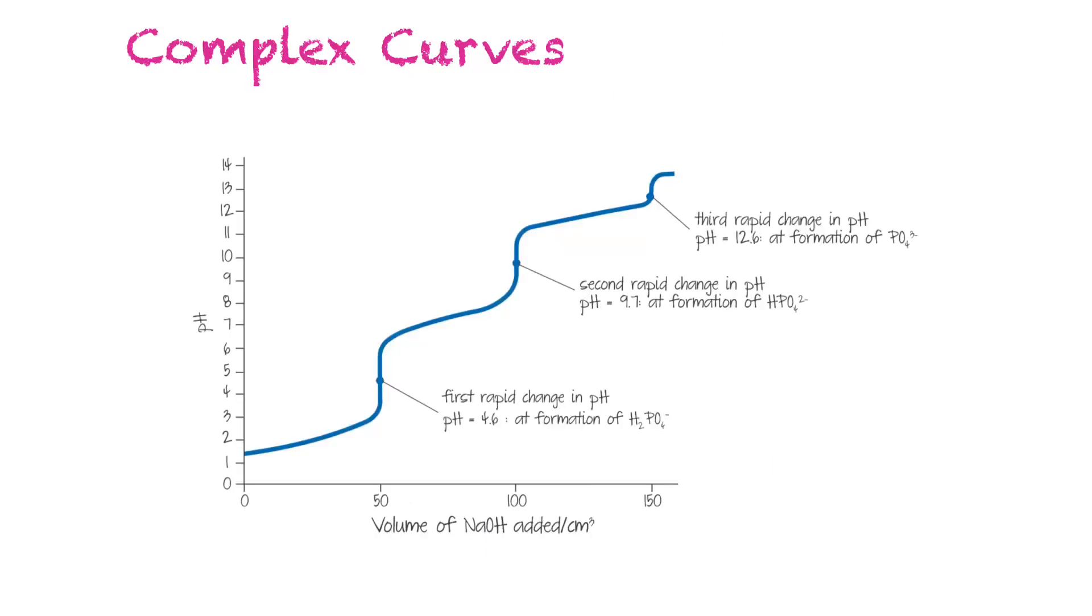Sometimes our titration curves can be actually quite complex. This would be an example here: the titration of sodium hydroxide with phosphoric acid. Remember, the phosphoric acid H3PO4 is a triprotic acid, so there's actually three equivalence points for each loss of each hydrogen ion in the dissociation of that acid.